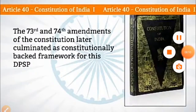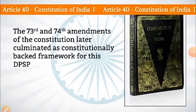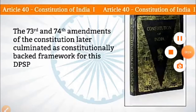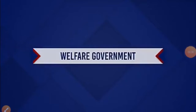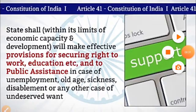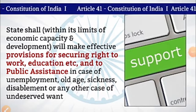The 73rd and 74th Amendments of the Constitution later culminated as the constitutionally backed framework for this directive principle of state policy. Welfare Government: Under Article 41, the state shall, within its limits of economic capacity and development, make effective provisions for securing the right to work, education, and public assistance in cases of unemployment, old age, sickness, disablement, or any other case of undeserved want.